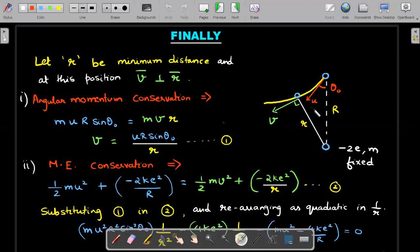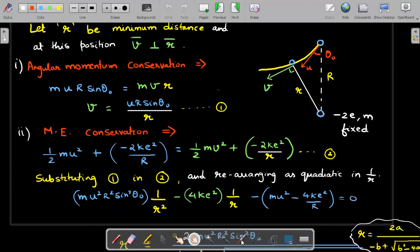The next equation I'll write is mechanical energy conservation of this electron from this fixed charge. Initial energy is ½mu² plus the potential energy, -2ke²/R, should be equal to the kinetic energy here plus the potential energy term here.